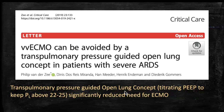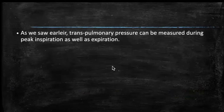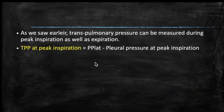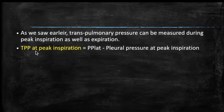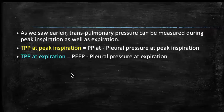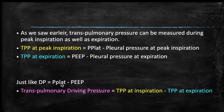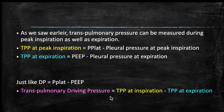Trans-pulmonary pressure can be measured during inspiration and expiration. During inspiration: airway plateau pressure (from the ventilator screen) minus pleural pressure at peak inspiration gives trans-pulmonary pressure at inspiration. During expiration: PEEP minus pleural pressure during expiration. Just as driving pressure is the difference between plateau pressure and PEEP, trans-pulmonary driving pressure is trans-pulmonary pressure during inspiration minus trans-pulmonary pressure during expiration.